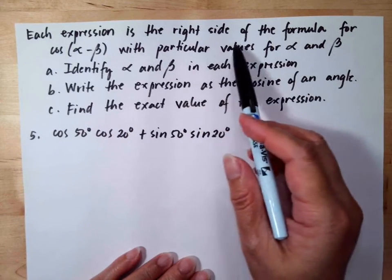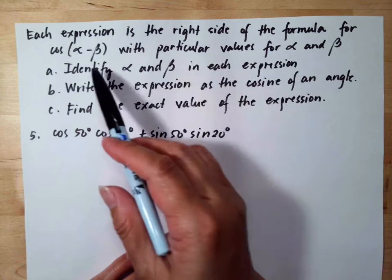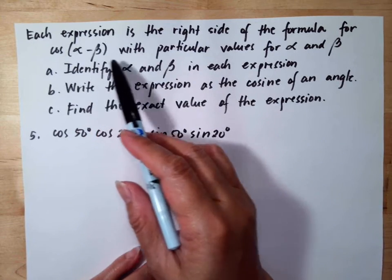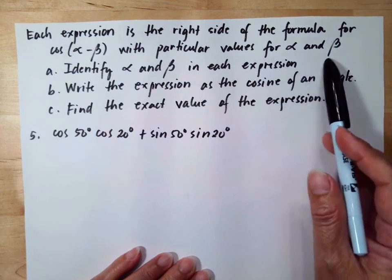This expression is the right side of the formula for the cosine alpha minus beta with the particular values for alpha and beta.